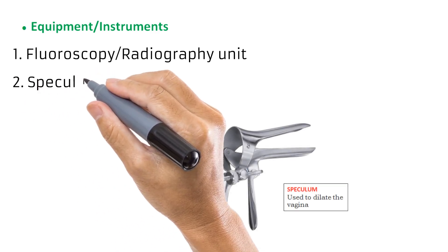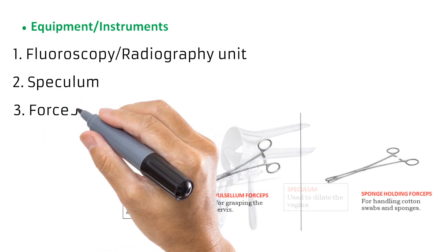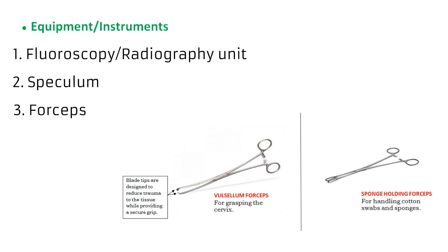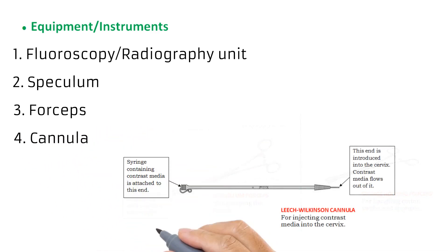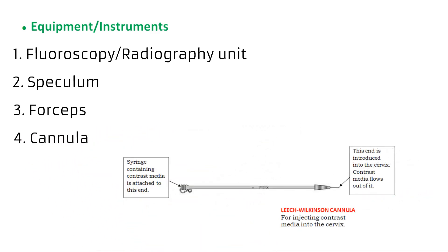Next is the speculum, used to dilate the vagina. Two common forceps used in HSG are the vulcellum forceps, which grip the cervix for stability using hooked blade tips designed to minimize trauma, and the sponge-holding forceps, used to handle cotton swabs and sponges during cleaning, with rounded blade tips. The cannula — for example the Leach-Wilkinson cannula — has a syringe containing 10 to 20 mL of contrast media attached to its lower end, while its tip is inserted into the cervix for injection.